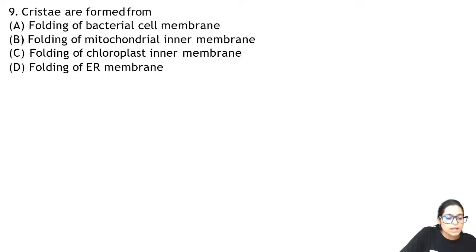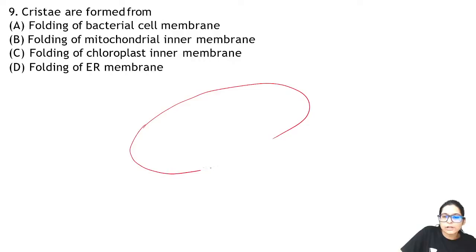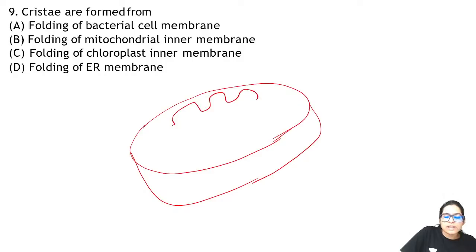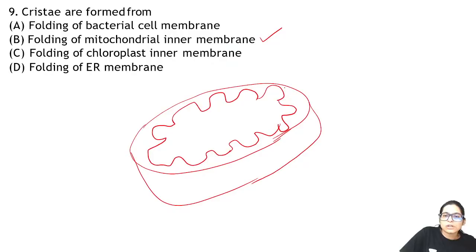Question: cristae are formed from what? Mitochondria is also known as the powerhouse of the cell because it releases ATP and energy. The inner membrane of mitochondria forms in-foldings, and these in-foldings are called cristae. They increase the surface area for enzymatic activity. So the answer is B.